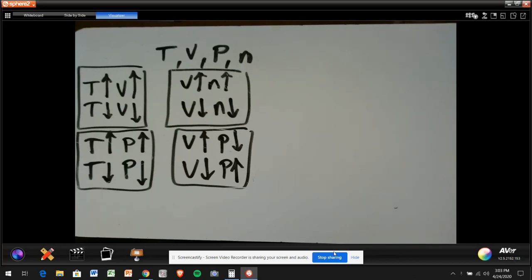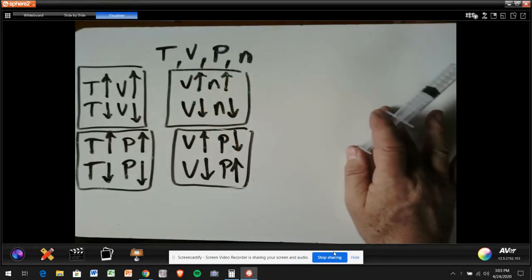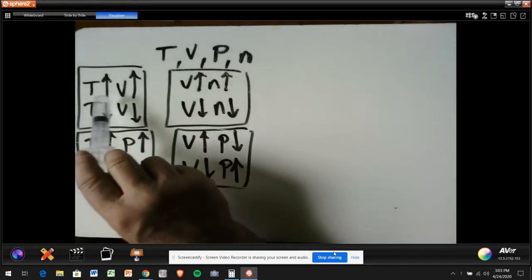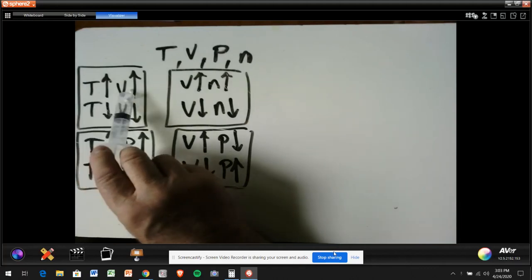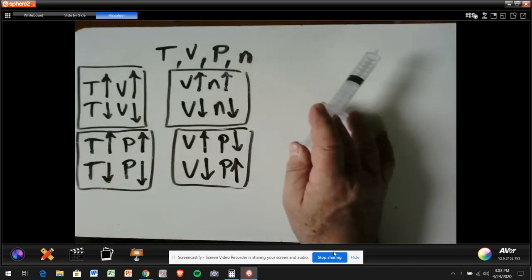In the last video, we worked on the idea that you have different variables: temperature, volume, pressure, and moles that all affect the behavior of a gas. If you heat up a gas, its volume is going to increase. So basically, on a hot day, a balloon swells up, and on a cold day, the balloon shrinks down.